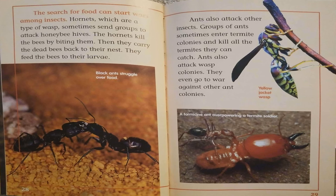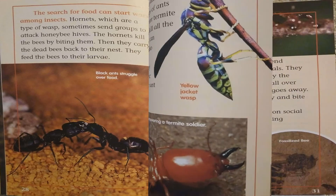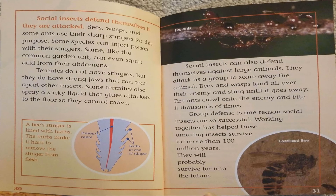Ants also attack other insects. Groups of ants sometimes enter termite colonies and kill all the termites they can catch. Ants also attack wasp colonies. They even go to war against other ant colonies. Social insects defend themselves if they are attacked. Bees, wasps, and some ants use their sharp stingers for this purpose. Some species can inject poison with their stingers. Some, like the common garden ant, can even squirt acid from their abdomens.